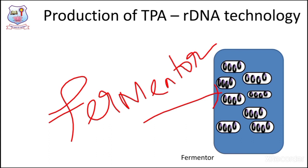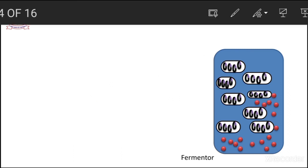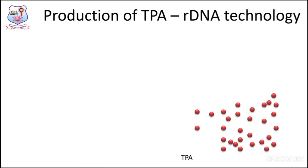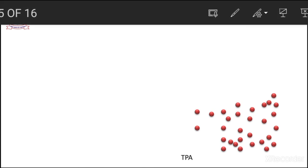What is actually going on during this process? During this time, the cell number increases. As the cell number increases, the plasmid number also increases. Within the cell, they undergo transcription and translation, and the required protein — tissue plasminogen activator — is also produced. The red color dots in the illustration indicate the production of tissue plasminogen activator within the fermenter. After the stipulated time period, the tissue plasminogen activator is extracted and separated from the media.